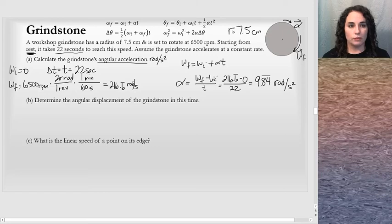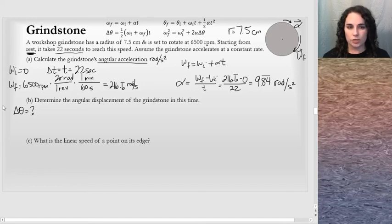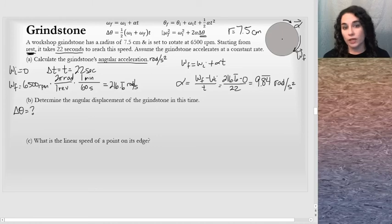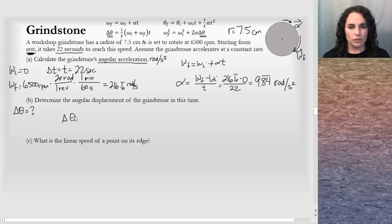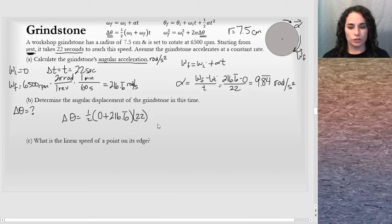Part B asks for the angular displacement of the grindstone during this time. We have many quantities already known. Using the equation delta-theta equals one-half times (omega_initial plus omega_final) times t, with initial omega equal to zero, final omega equal to 216.6 repeating radians per second, and time equal to 22 seconds, we can solve for the angular displacement.